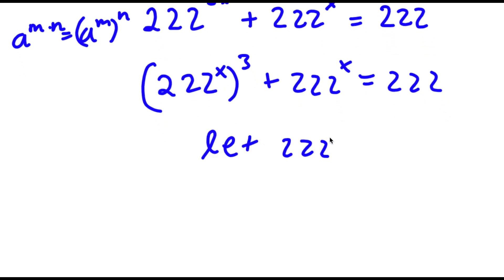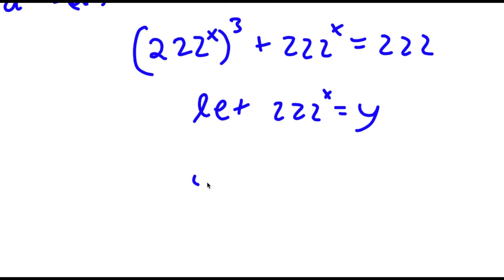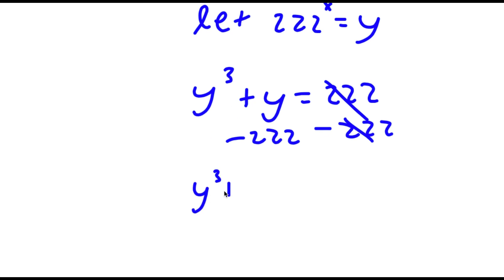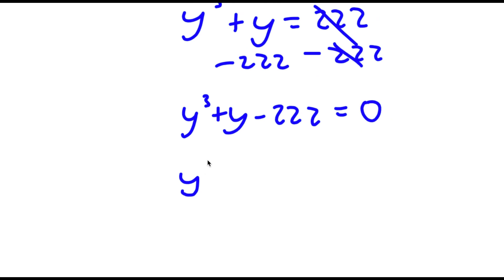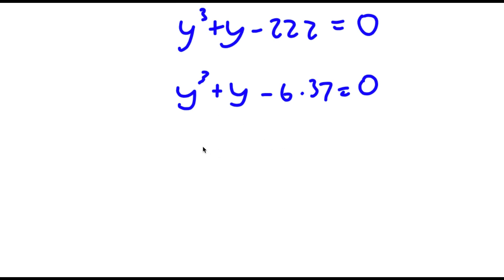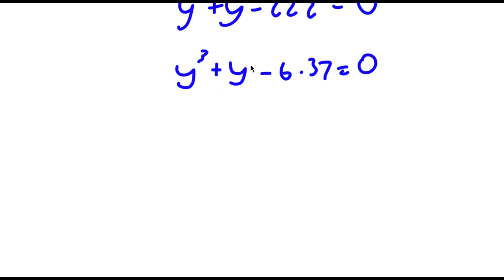Now I'm going to let 222 to the power of x equal the variable y. So now I have y to the power of 3 plus y is equal to 222, and if I subtract 222 on both sides, I get y to the power of 3 plus y minus 222 is equal to 0. Now I'm going to rewrite 222 as 6 times 37, and rewrite y as negative 36y plus 37y.